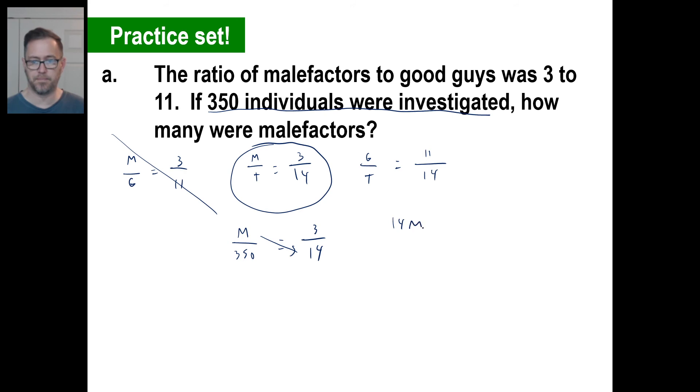And we just cross multiply, right? 14 times M, 14 M. Three times 350 is 1,050. And then divide by 14. If you want to use a calculator to save yourself time, that's fine. The answer is 75 malefactors. Ooh. Okay. All right. Good enough. Try B. Go ahead and pause it and see what you get.